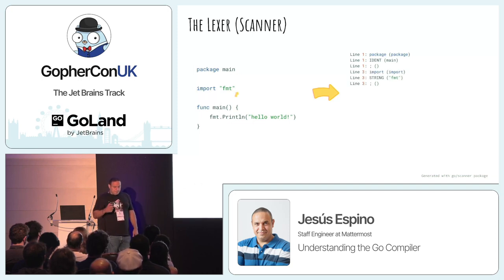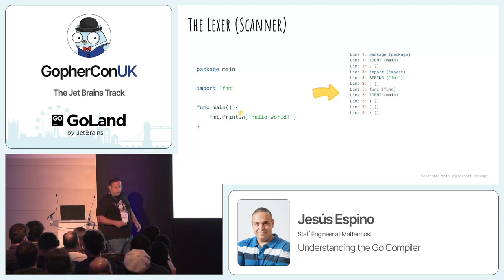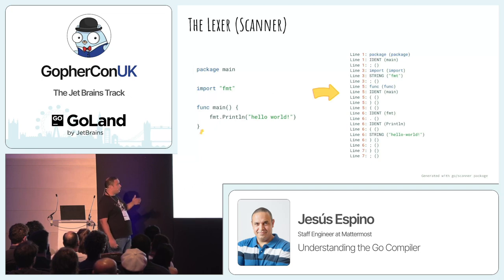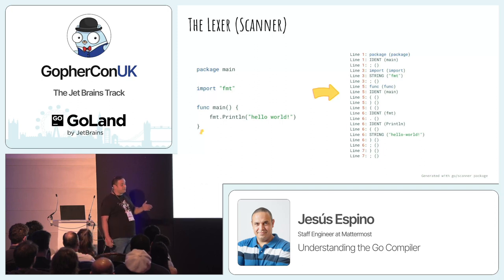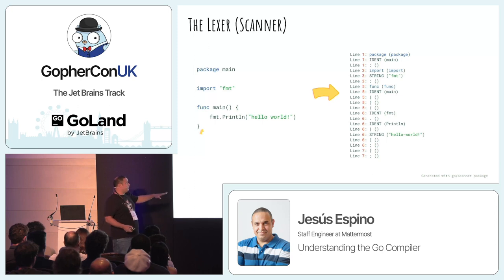'import' looks like an identifier but it's a keyword, 'fmt' is a string, a semicolon is automatically added, 'func' is a keyword, 'main' is an identifier, open parenthesis, close parenthesis, open braces — they are all independent tokens. Then 'fmt' is an identifier, dot, 'Println' is another identifier, open parenthesis, string, close parenthesis, automatically added semicolons. That is exactly the same code but with a different representation — and you can rebuild the original code just from that.